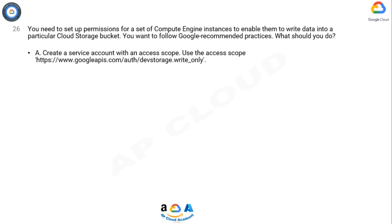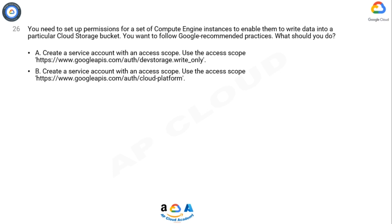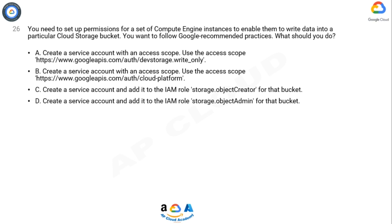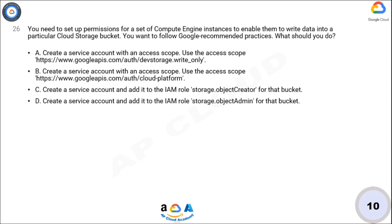Option B: Create a service account with an access scope; use the access scope https://www.googleapis.com/auth/cloud-platform. Option C: Create a service account and add it to the IAM role Storage Object Creator for that bucket. Option D: Create a service account and add it to the IAM role Storage Object Admin for that bucket. Now take 10 seconds to think about the answer.